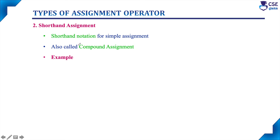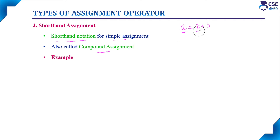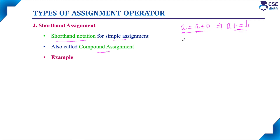The next type is shorthand assignment, which is a shorthand notation for simple assignment, also called compound assignment. For example, a = a + b can be written as a += b. The += is the shorthand assignment operator, and the two expressions are equivalent.